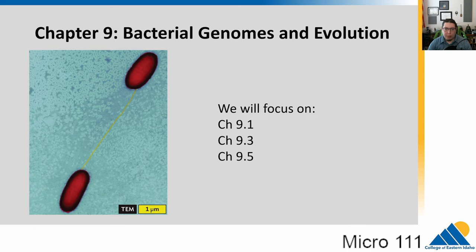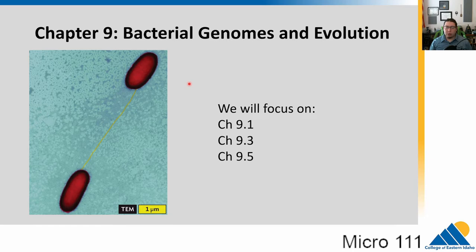Hello, welcome to the chapter 9 videos. Chapter 9, we are going to switch things up a bit. Chapter 9 is about bacterial genomes and evolution. So we've learned a bit about the process of DNA replication, learned a little bit about genes and how they're expressed. Now we're going to talk bigger picture — what this means environmentally, ecologically, but also in evolution in a healthcare setting, which is very critical to understand.